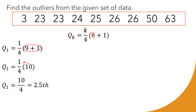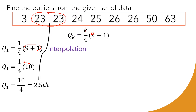The value 2.5 falls between the second and third values. Since we don't have an exact location, we need to use interpolation: lower value + decimal value × (difference of the two involved values). Our lower value is 23, the decimal value is 0.5, and the two involved values are 23 and 23.